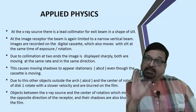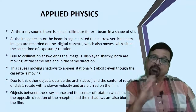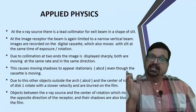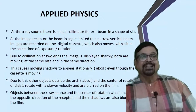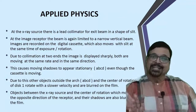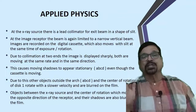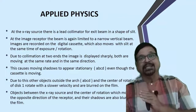Due to collimation at two ends, the image is displayed sharply because both the source and receptor are moving at the same time, in the same speed and in the same direction. Whatever comes in that plane only will get sharply focused.